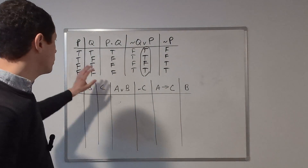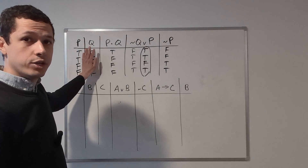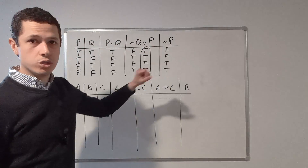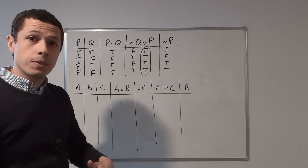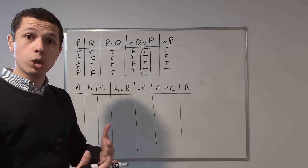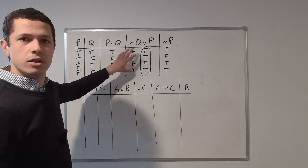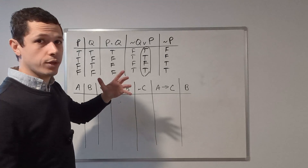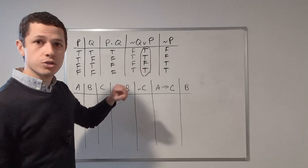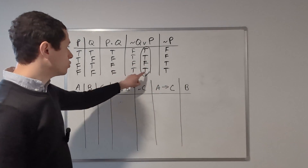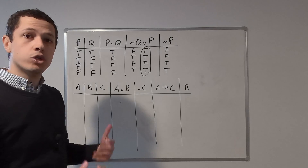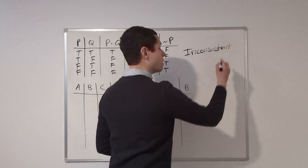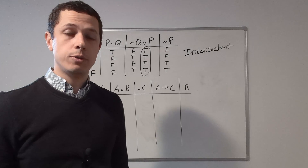Those are all the truth values. Remember, the initial atomic columns are just for setup — we're only concerned with the three compound statements. Let's check consistency by looking for a row where all statements are true. I like to circle the main connective truth values so they stand out. Row 1: T, T, F — not all true. Row 2: F, T, F — no. Row 3: F, F, T — no. Row 4: F, T, T — no. There is no row where all statements are true, so this set of statements is inconsistent. It's inconsistent because it's not possible for all of the statements to be true at the same time.